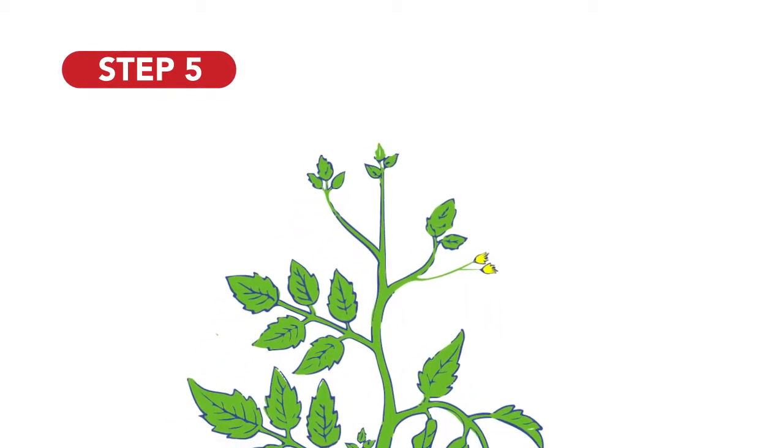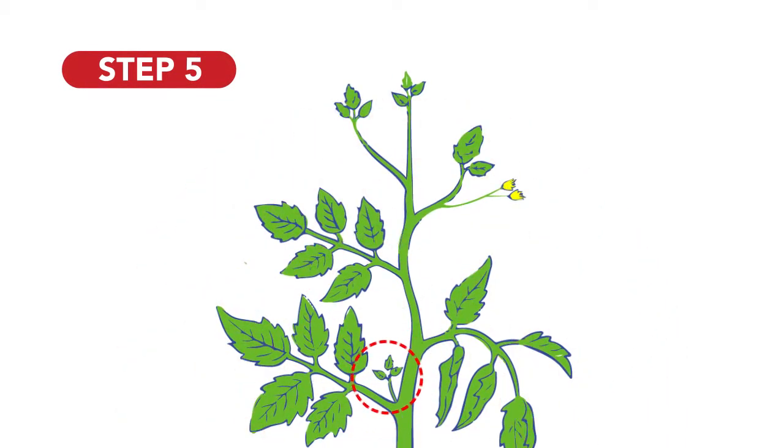When growing the tomato plant, always expect the suckers. Suckers are the growth that appears in the crotch between the stem and the branch.